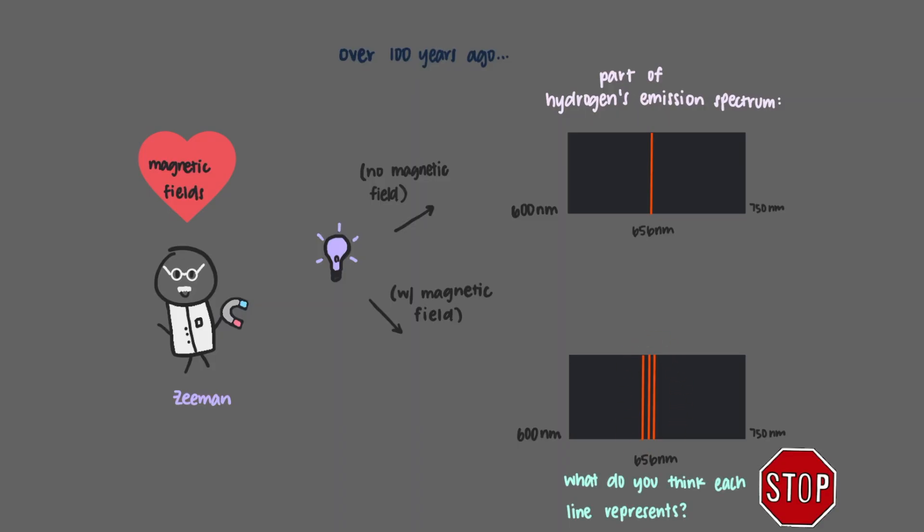What do you think each line represents? That's right, each line represents a distinct change in an electron, but what other changes are happening now that there is a magnetic field? Let's investigate.